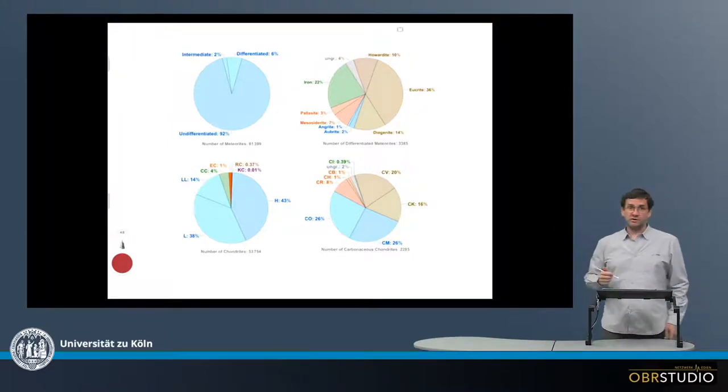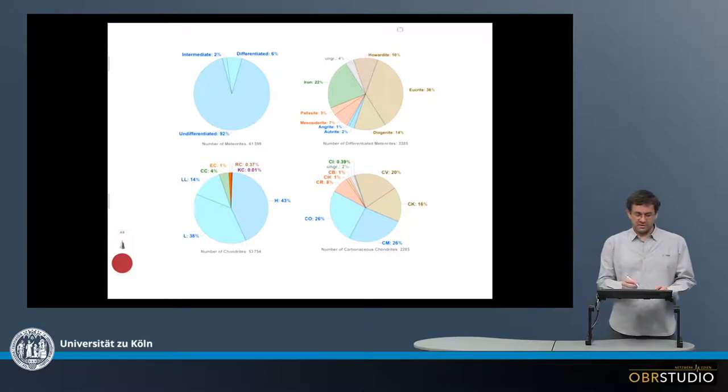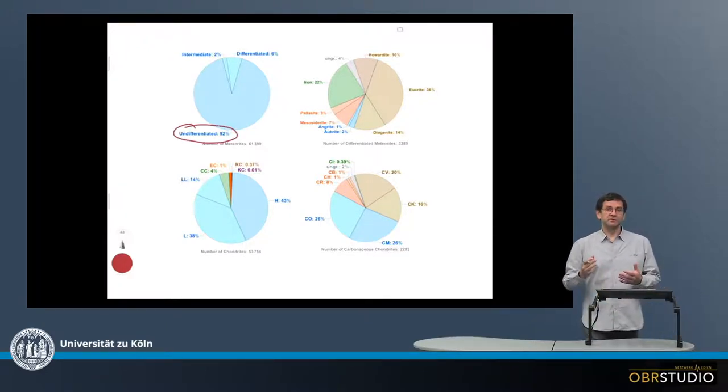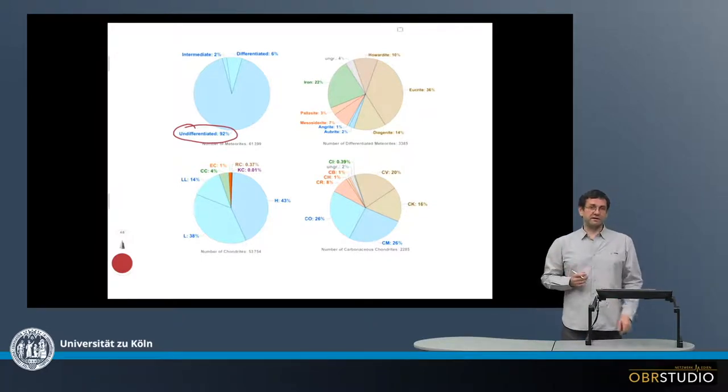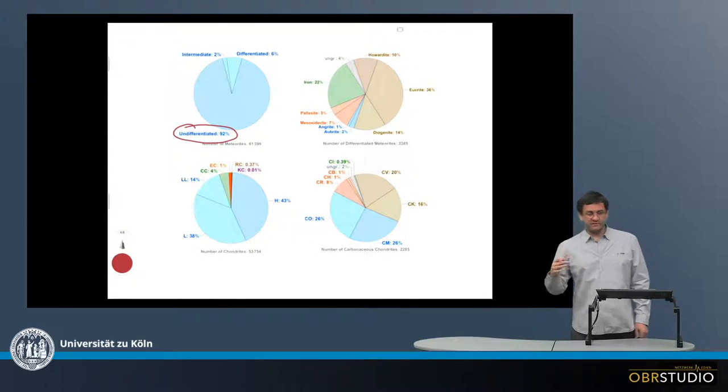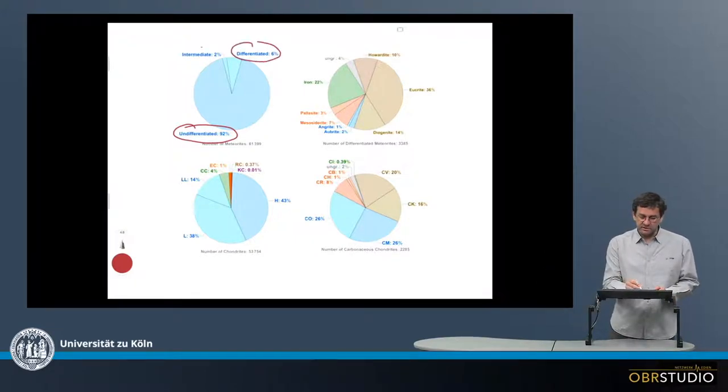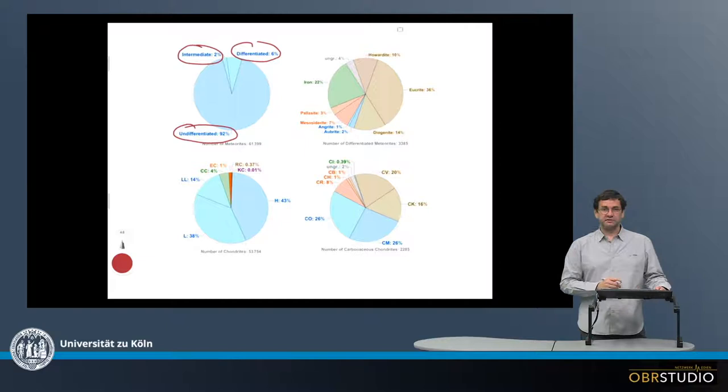From the first pie chart we learn that the vast majority of meteorites come from undifferentiated parent bodies. So these are primitive parent bodies that never developed a core and a mantle. Those that developed a core and a mantle are the differentiated or the intermediate meteorites.